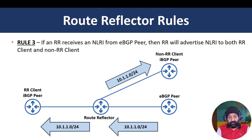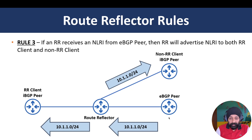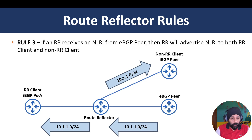Rule number three: if an NLRI is received from an eBGP peer, it will be advertised to both RR clients and non-RR clients. So if an eBGP router advertises to the route reflecting router, it will be forwarded to both RR client routers and non-RR client routers. All these routers are in the iBGP sphere while the eBGP router belongs to another AS.